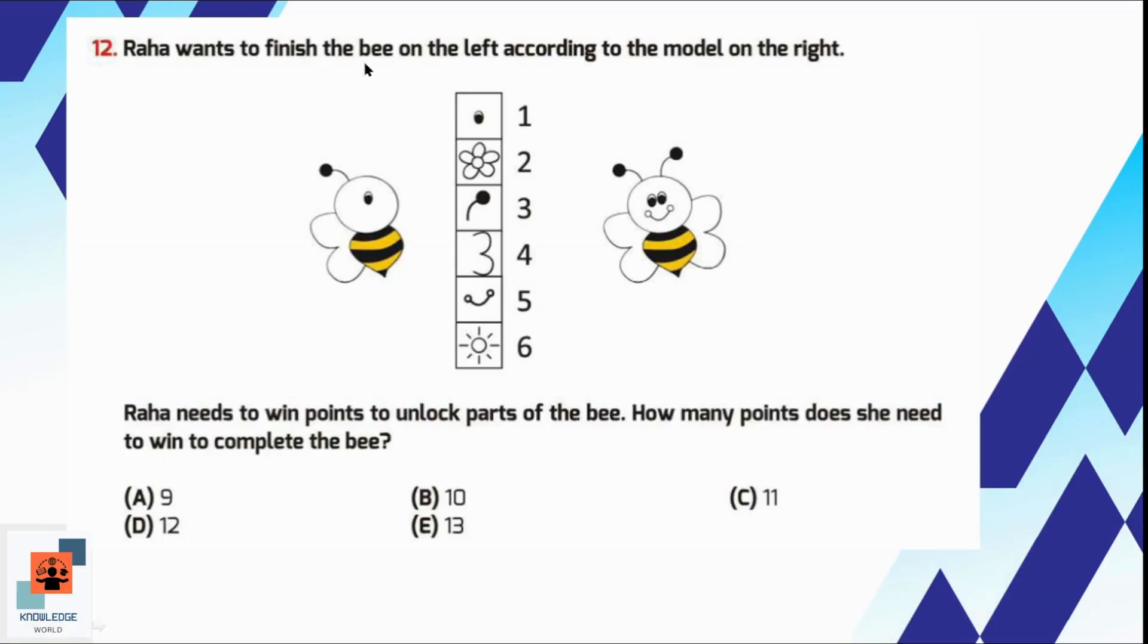Question number 12, Raha wants to finish the bee on the left according to the model on the right. Raha needs to win points to unlock parts of the bee. How many points does she need to win to complete the bee? Here we will compare both the bees. One antenna, eye, wing, and smile of the bee is missing. So we will choose one eye, the point of eye is 1. Then one antenna, the point of antenna is 3. Similarly the point of wing is 4 and the point of smile is 5. Now we will find out the total of the numbers. It's 1 plus 3 plus 4 plus 5 is equal to 13. So option E is the correct option here.